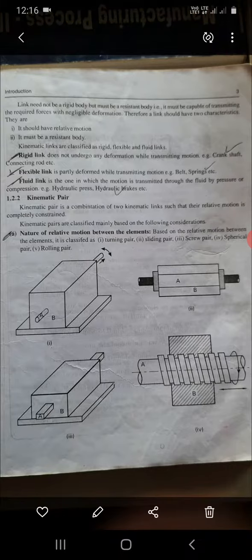Kinematic Pair is a combination of two or more kinematic links to have relative motion and is completely constrained. Classification of kinematic pair: the nature of the motion between the pair.